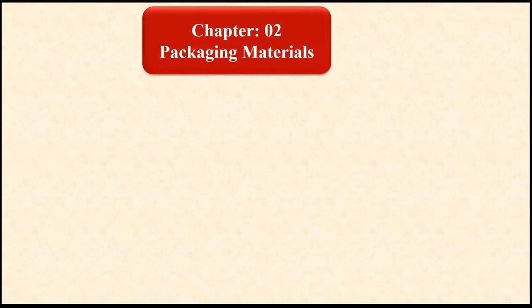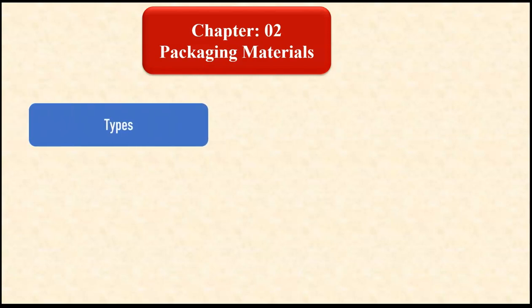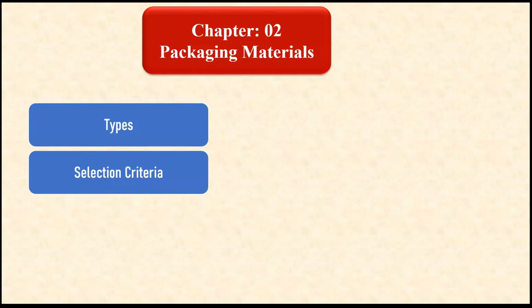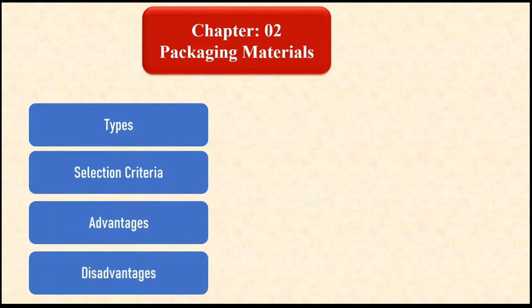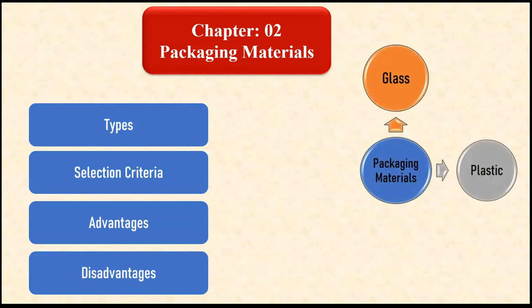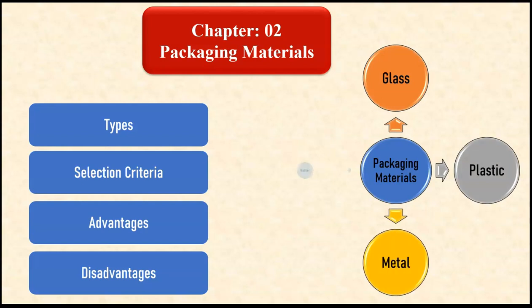The second chapter in Pharmaceutics is packaging materials. In this chapter we are going to study the types, selection criteria, advantages, and disadvantages of different packaging materials like glass, plastic, metal, and rubber.